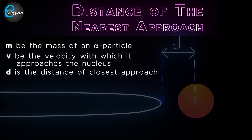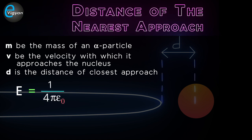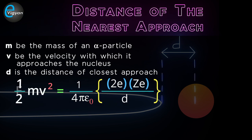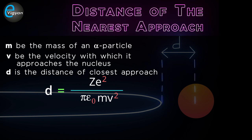The kinetic energy of the alpha particle is given by E = ½mv². Since there is no external non-conservative force acting on the system of the alpha particle and the nucleus, the mechanical energy of the system is conserved. As the alpha particle approaches the nucleus, its kinetic energy decreases and is gradually converted into electrostatic potential energy. At the point of nearest approach, the kinetic energy is fully converted into electrostatic potential energy due to Coulomb's force of repulsion. That is: E = (1/4πε₀) · (2e · Ze)/d, which gives d = Ze²/(πε₀ · mv²).